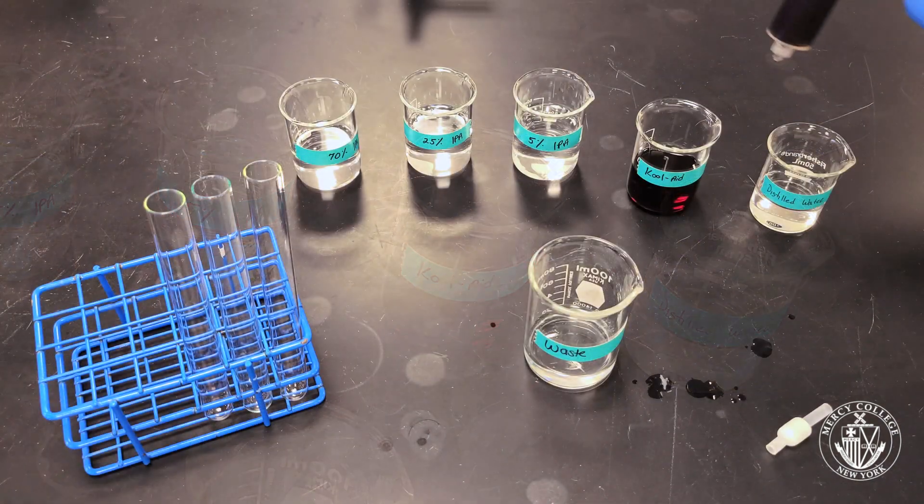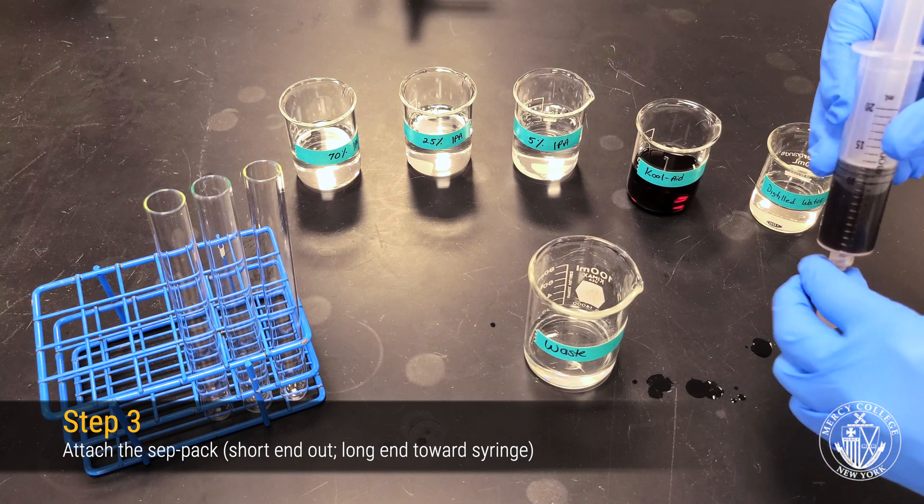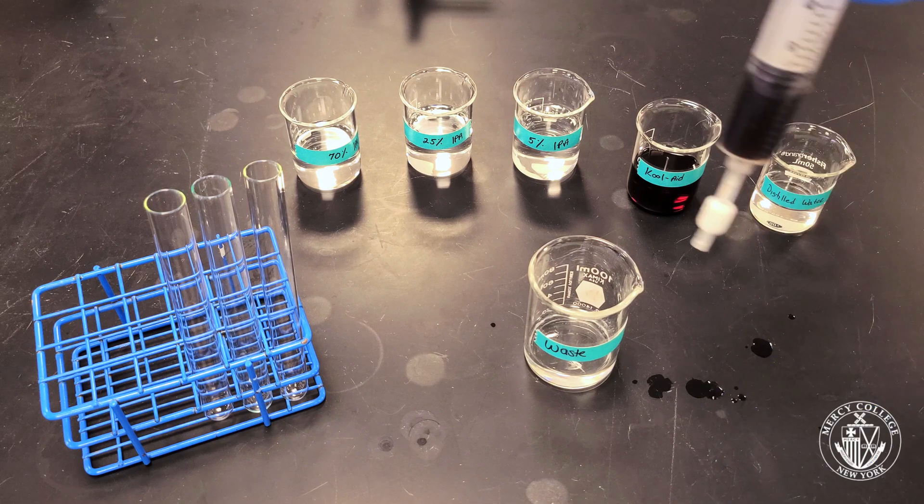After filling your syringe, reattach the CEPPAC cartridge. Next, we're going to slowly push our grape Kool-Aid solution through our CEPPAC cartridge in order to load the column.